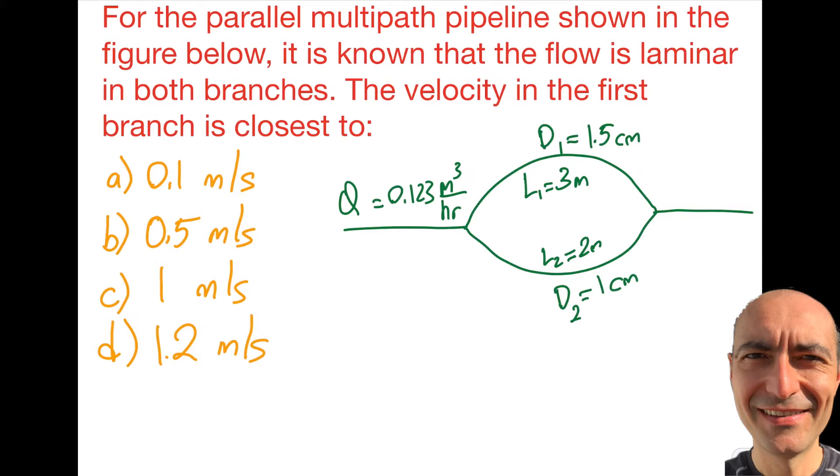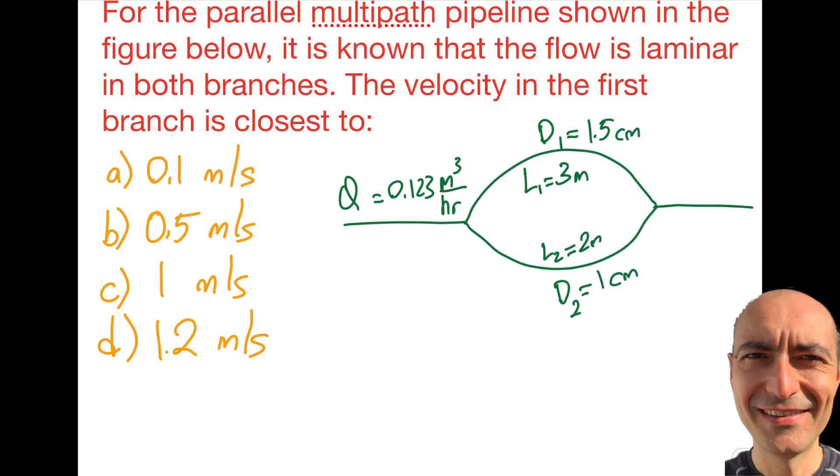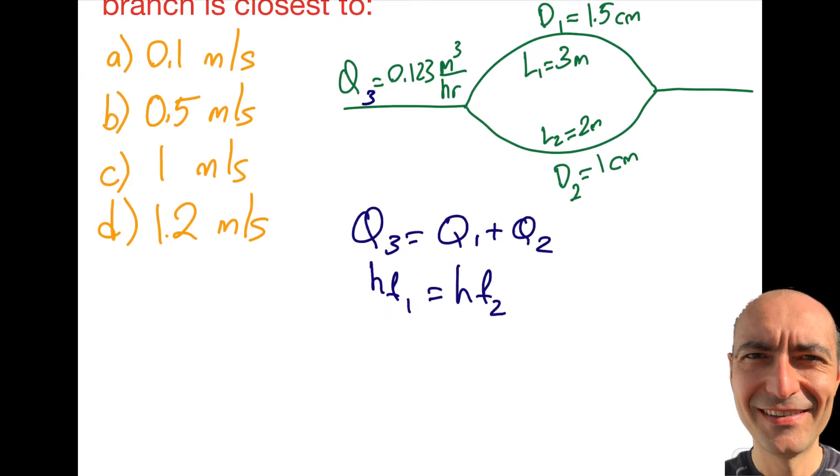I go out and look at page 186 of the reference manual 10th edition. You see there's a section called multipath pipeline, so Q3 will be equal to Q1 plus Q2. Basically I'm gonna have the flow rates to obtain the main branch. And also it says hf1 will be equal to hf2. So the losses in each branch will be the same. That should be sufficient to find the velocity in the first branch. Let's see what happens.